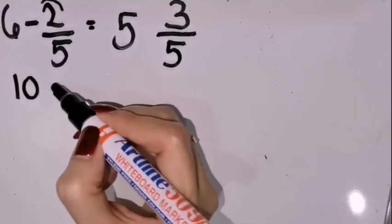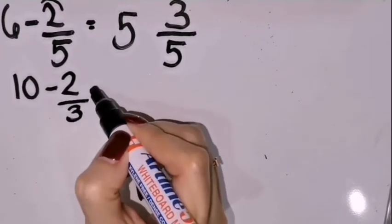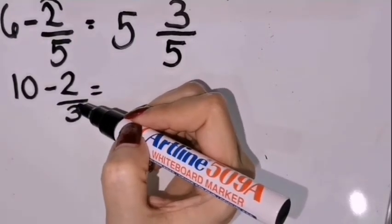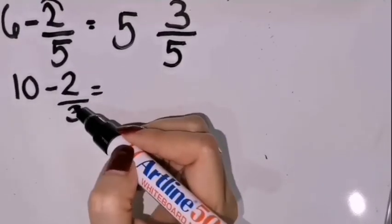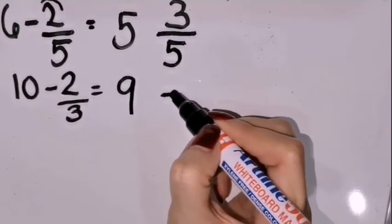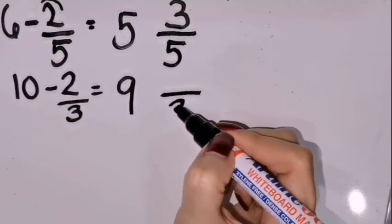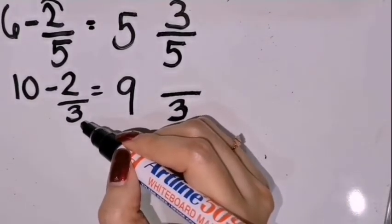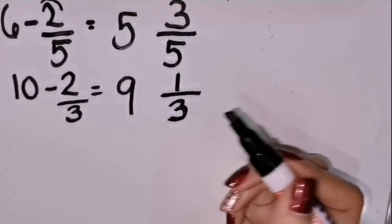So, 10 minus 2 thirds. Again, we will round the proper fraction off to 1. So that's 10 minus 1, it's 9. And then, copy the denominator — 3 — and subtract: 3 minus 2 is 1. So the answer is 9 and 1 third. That's quick!